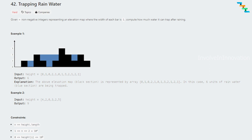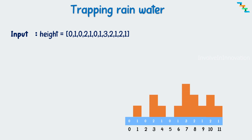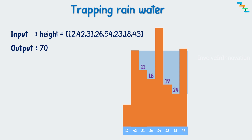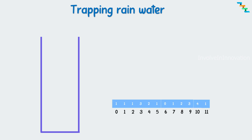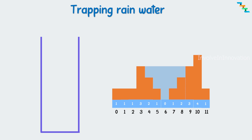Now we will see one interesting problem which can be solved using the monotonic stack: the trapped rainwater problem. This is a hard LeetCode problem. The problem statement states: given n non-negative integers representing an elevation map where the width of each bar is one, compute how much water it can trap after raining. We will see this with examples. We need to store the bars in decreasing order because water holding capacity is based on the highest bar. We will use the decreasing monotonic stack and allow duplicates.